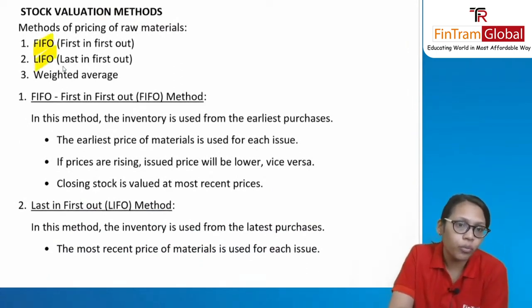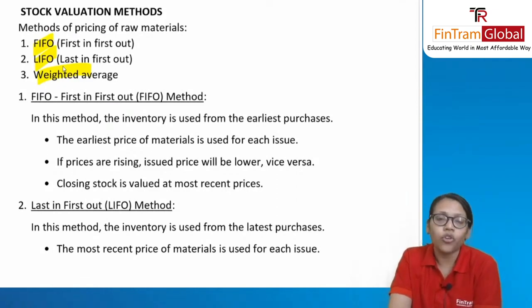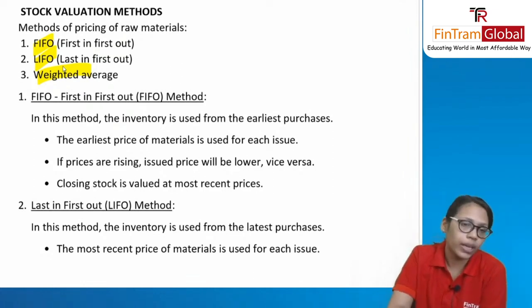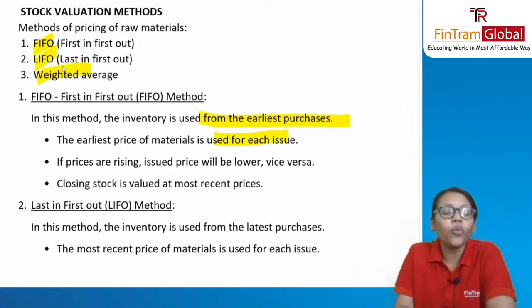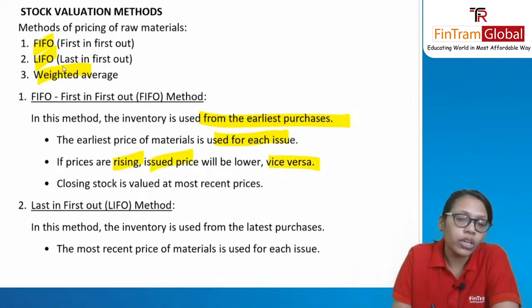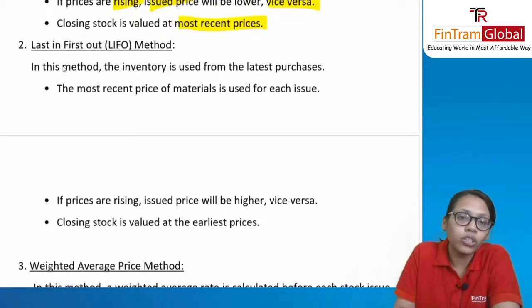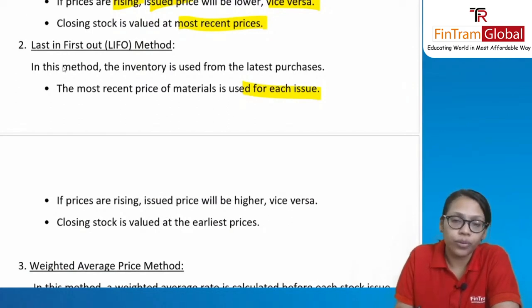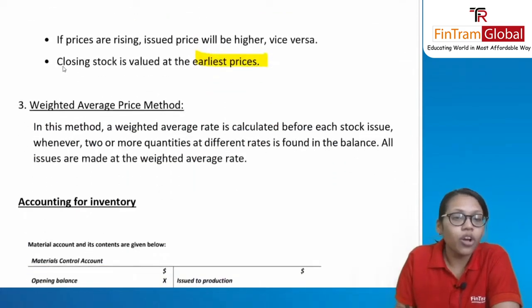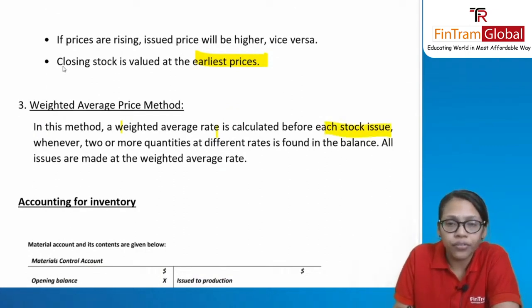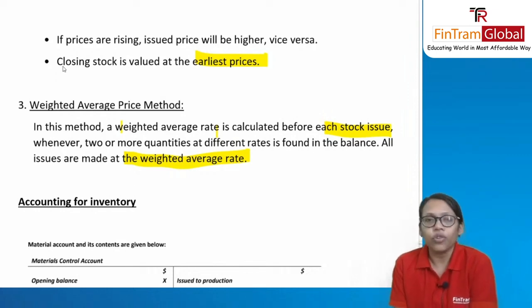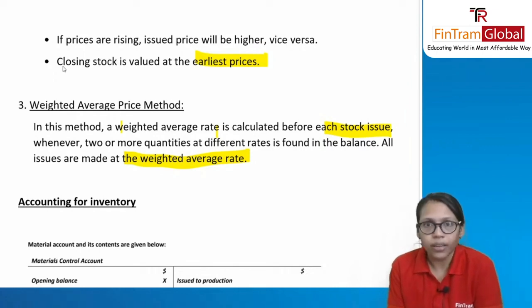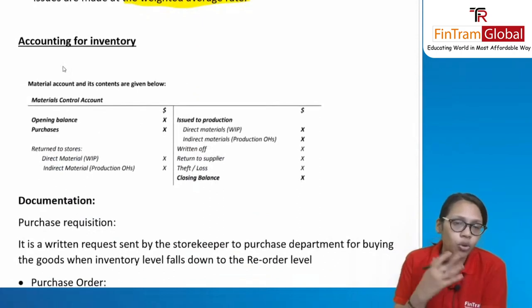Stock valuation methods: FIFO (first in, first out) uses the earliest purchase price for each issue — if prices are rising, issued price is lower; closing stock is valued at the most recent price. LIFO uses the most recent price — if prices are rising, issued price is higher; closing stock is valued at the earliest price. Weighted average calculates a weighted average rate before each issue when two or more quantities at different rates exist in balance.